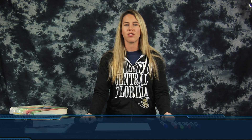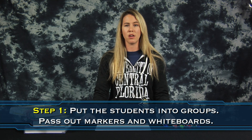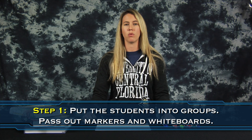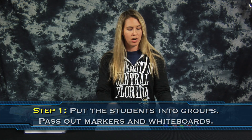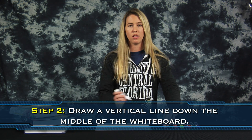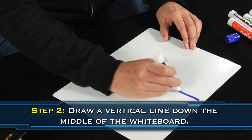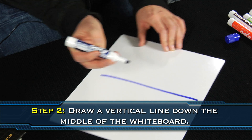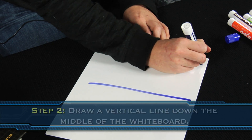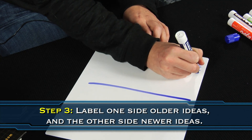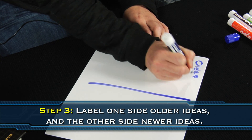Now onto the lab. First, split the class up into small groups and give each one a set of markers and a whiteboard. Instruct them to draw a vertical line on their boards, then tell them to label one side 'older ideas' and the other side 'newer ideas.'